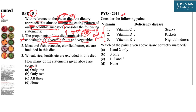Statement two says that meat, fish, avocado, clarified butter etc. are included in the paleo diet — this is correct. Statement three says wheat, rice, lentils etc. are excluded from this diet. The diets we generally consume today are not paleo diets, so yes these are excluded — this is also correct. So statements two and three are correct, and option B is the correct answer. The answer to the previous question is option A, one and two only.